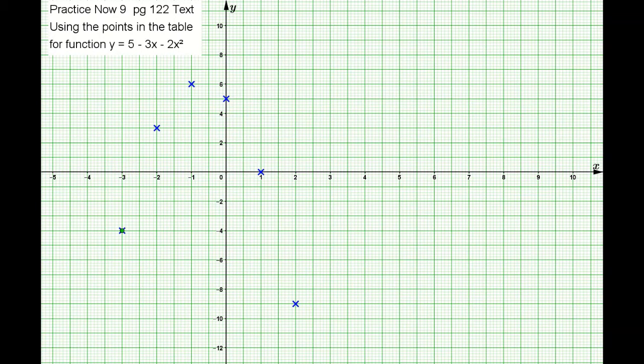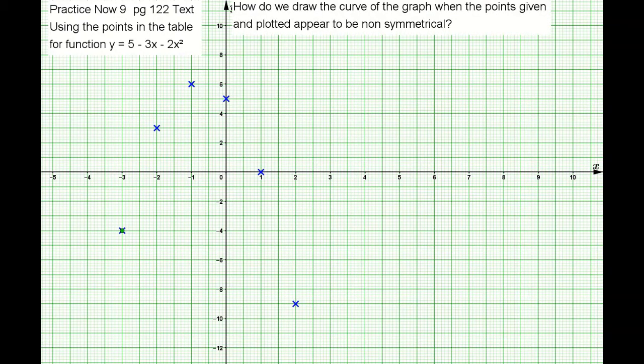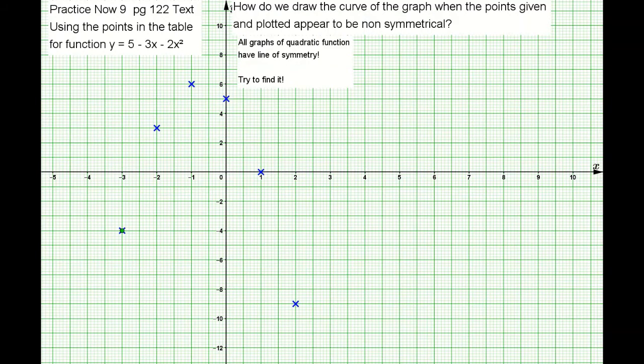You plotted out the points from x equals negative 3 all the way until x equals 2. You notice that the points don't seem to show any kind of symmetry, so how are you going to plot the graph? I want you to remember that all graphs of quadratic functions have lines of symmetry, so we need to try to find it.